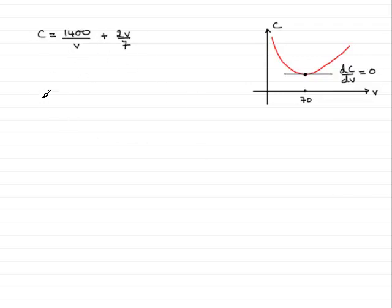And if we do that, let's just say that when V equals 70, then C is going to equal 1,400 divided by 70 plus 2 times 70 all over 7.